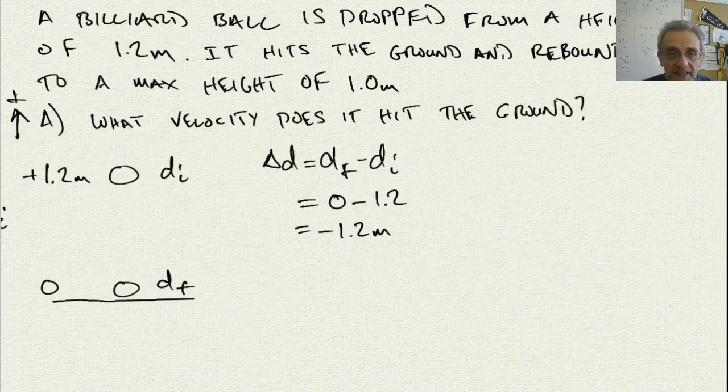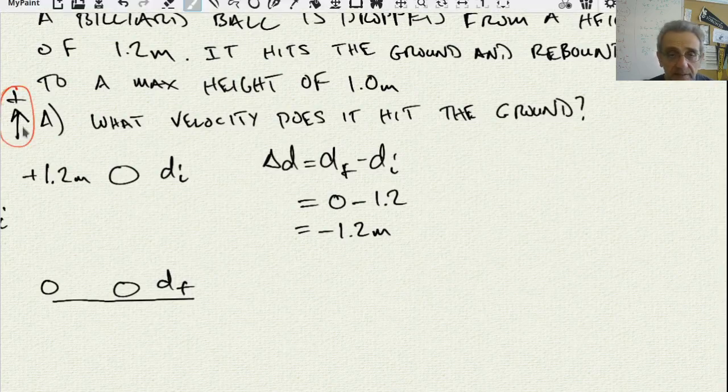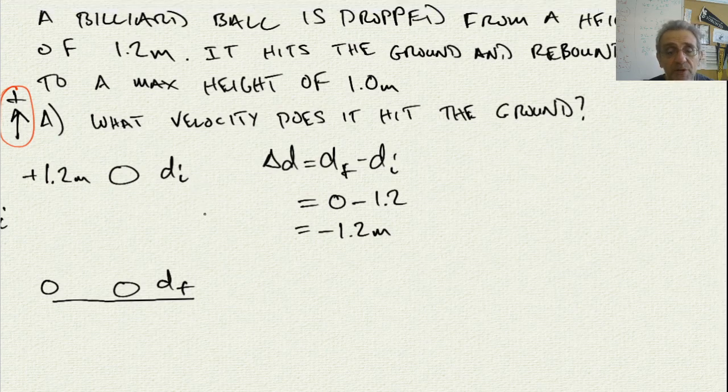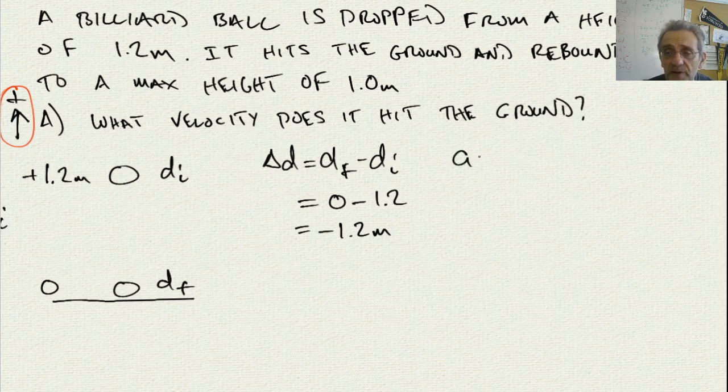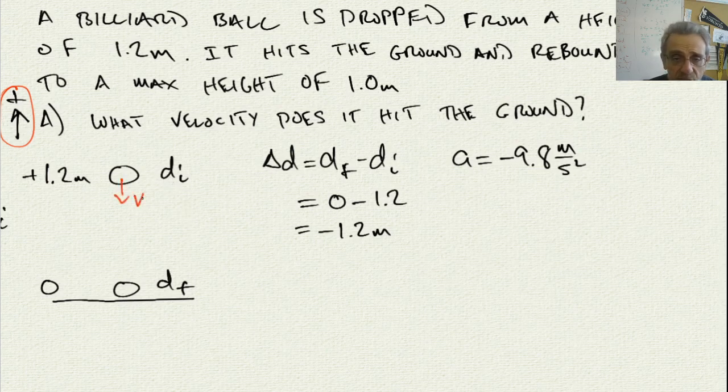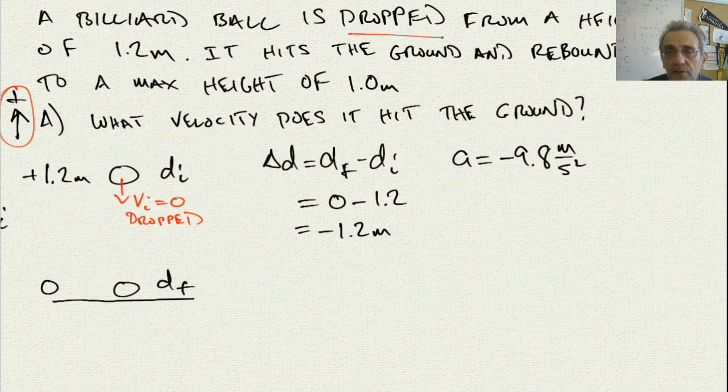This is all dependent on my positive direction. I will always choose up as being positive. Now, if I do that, I know, therefore, that my acceleration of this thing has to be negative 9.8 meters per second squared due to gravity. Now, what else do I know? Well, I know one other thing as well. I know that my initial velocity is equal to zero, and that's because of the word dropped right there. If you see the word drop, it means the initial velocity is zero.